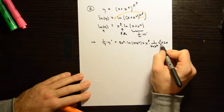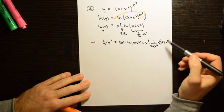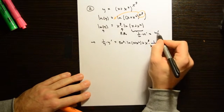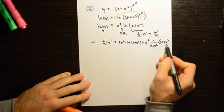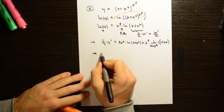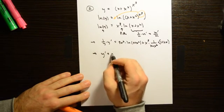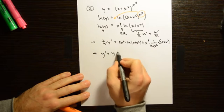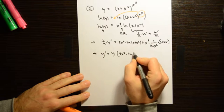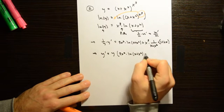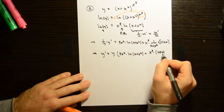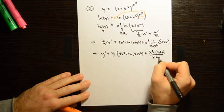Wait — those parentheses around (x plus x squared) in the denominator are absolutely essential. If you're worried you might miss them, write it as u prime over u instead of 1 over u times u prime, so the numerator (1 plus 2x) is clearly in the numerator. Simplifying: y prime equals y times [3x squared times ln(x plus x squared) plus x cubed times (1 plus 2x) divided by (x plus x squared)].